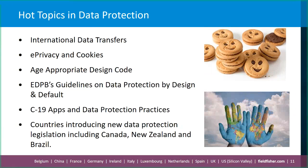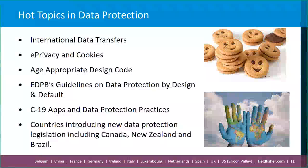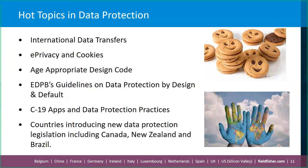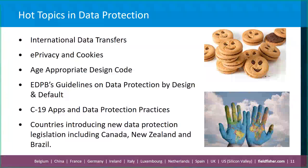The UK ICO's Age Appropriate Design Code is going to become applicable on the 2nd of September 2021. This code applies to online services that are likely to be accessed by under-18s in the UK — a very wide scope, meaning many online services need to check whether it applies to them and, if so, prepare now to demonstrate compliance by that date. The code consists of 15 standards covering topics including transparency, default settings, parental controls, profiling, and nudge techniques.